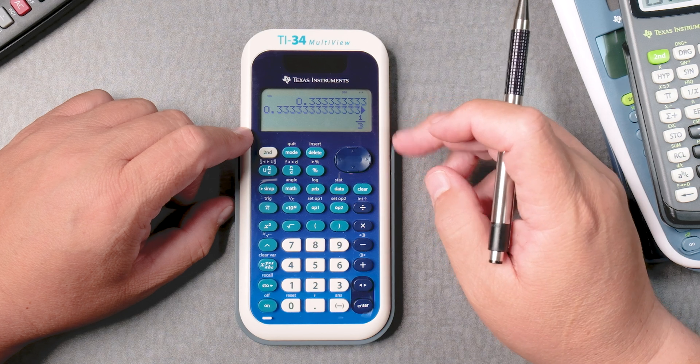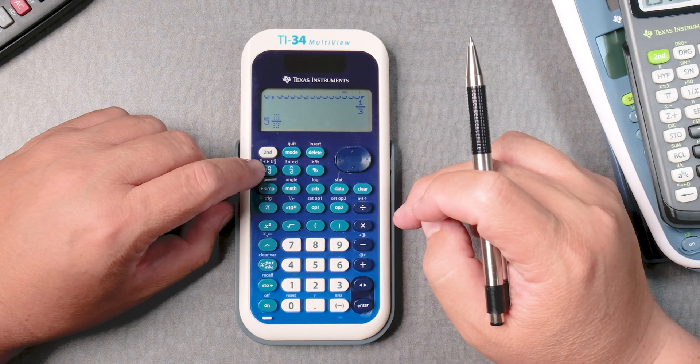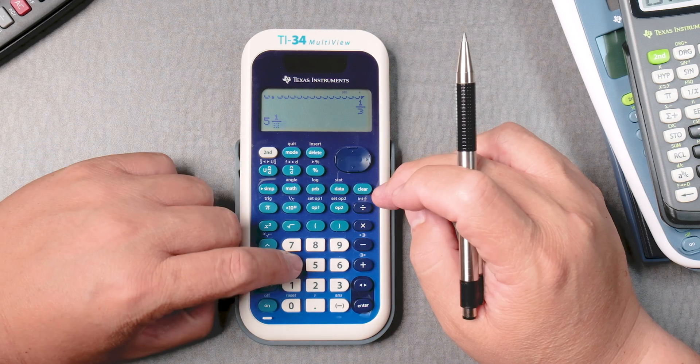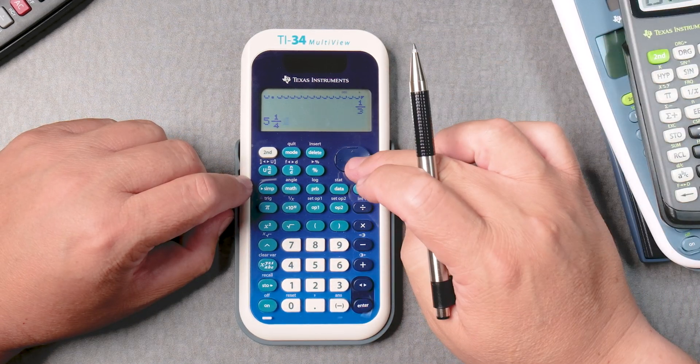Let's say you want 5 and 1 fourth, so 5, U N D, 1, bring it down, 4, go across with the D pad,